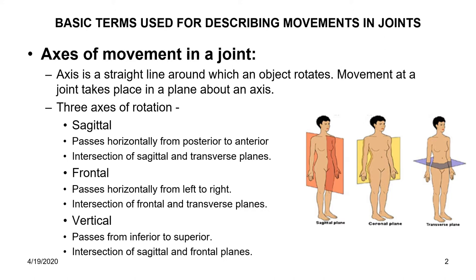Movement at a joint takes place in a plane around an axis. This is the basic term used for describing movements of a joint — the axis of movement means a straight line around which an object rotates, and movement at a joint takes place in a plane around an axis.